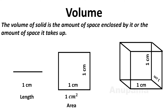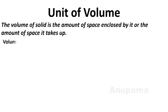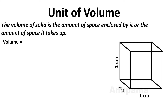Now let us come to the solid. It is a 3D shape which is a cube — a cube with sides of one centimeter each. The space enclosed by this cube or cuboid is called volume, and here it is one centimeter cube. The volume of a cuboid which has sides of one centimeter each means it is a cube, that is one centimeter cube.